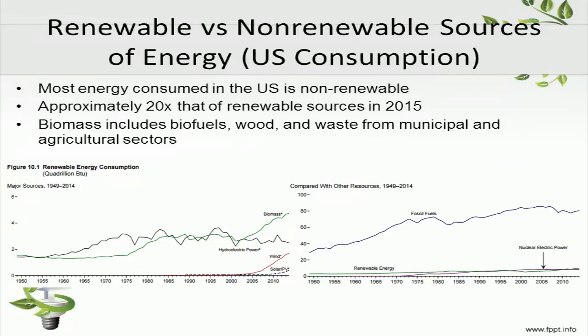Most of our consumable energy is produced through the use of non-renewable resources. These graphs from the U.S. Energy Information Administration, or EIA for short, illustrate the breakdown of renewable energy consumption in the U.S. by source. The EIA is a government-funded agency under the Department of Energy and compiles data from multiple sources on energy use within the United States. The graph on the left-hand side compares renewable energy sources and includes hydroelectric, wind, solar, and biomass sources. The biomass group considers biofuels, wood, and waste from municipal and agricultural sectors.